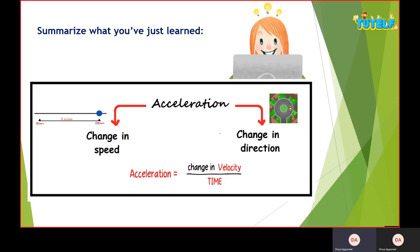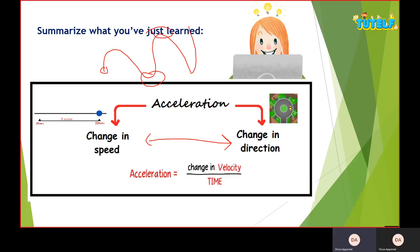To summarize: acceleration occurs when there is a changing speed, a changing direction, or both. The formula of acceleration is change in velocity divided by total time. The unit is meter per second squared, because velocity is in meters per second and time is in seconds.